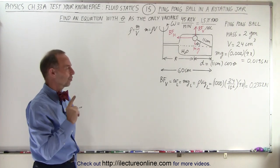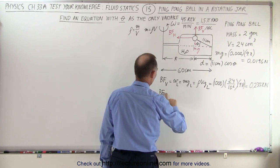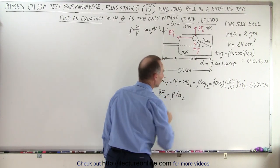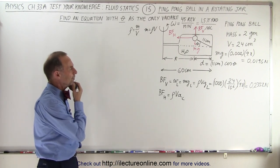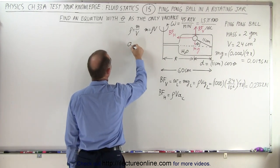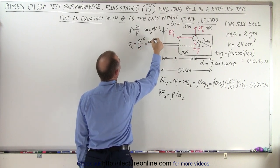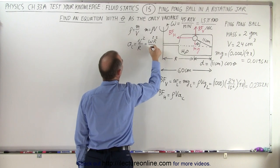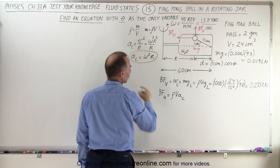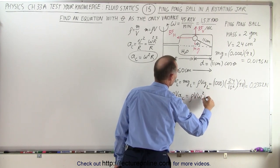Now what about the buoyancy force in the horizontal direction? That's going to be equal to rho times V times the centripetal acceleration, caused by the centripetal acceleration. The centripetal acceleration is V squared over R, and since V equals omega times R, this simplifies to omega squared times R. So the horizontal buoyancy force equals the density times volume times omega squared times R.